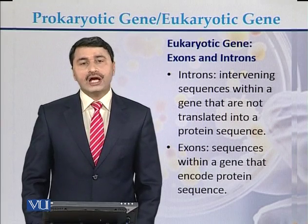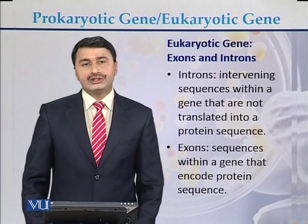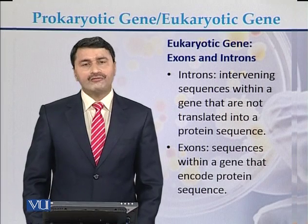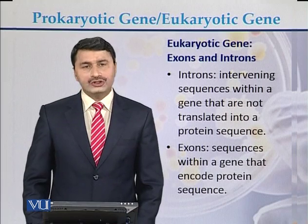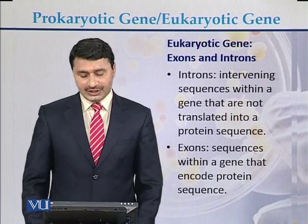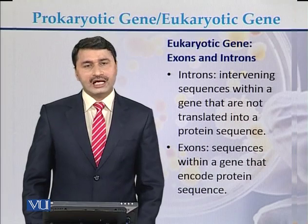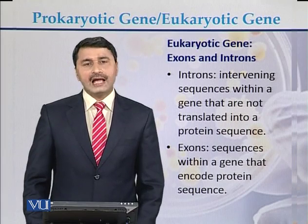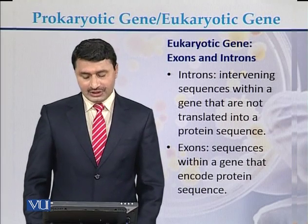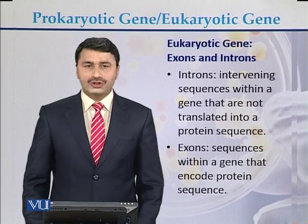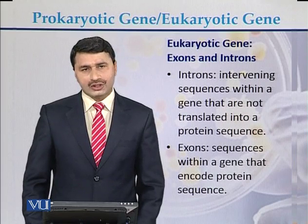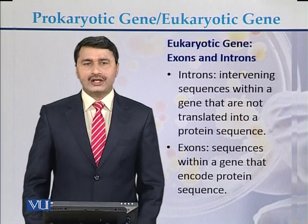In eukaryotic genes, these genes contain exons and introns. Introns are intervening sequences within a gene that are not transcribed into protein or polypeptides, while exons are sequences within a gene that encode for protein sequence. Exons and introns are found in eukaryotic genes.